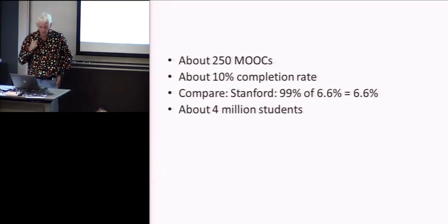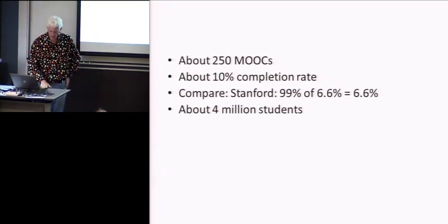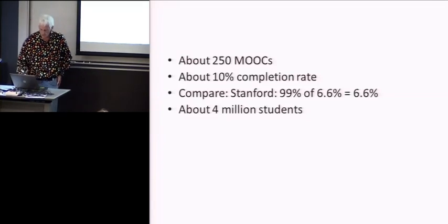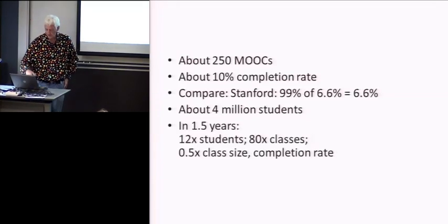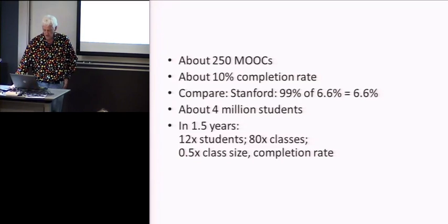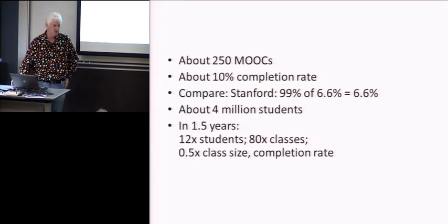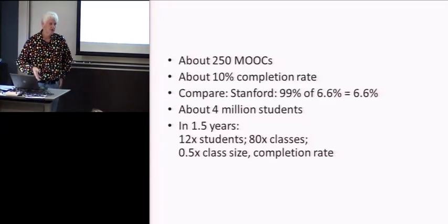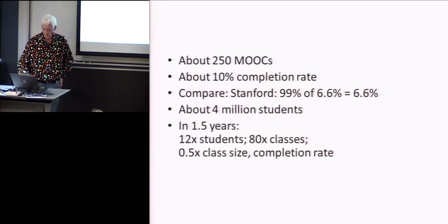We should try to understand why are they failing? Are they feeling discriminated against? Do they not have the prerequisites? Are there parts of the technology that aren't working right? So let's focus on the whys rather than the numbers. Looks like there's about 4 million students all together. In the one and a half years since this all started, there's been at least a 12-fold increase in the number of students, but an 80-fold increase in the number of classes.